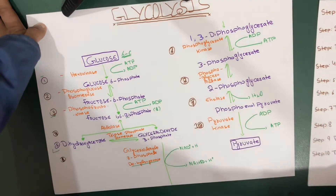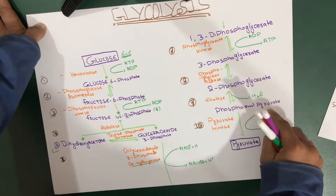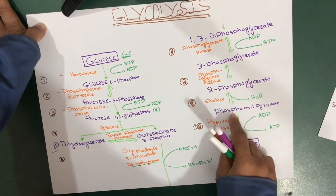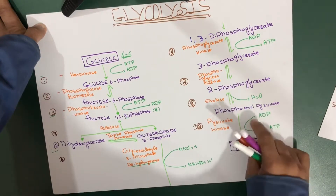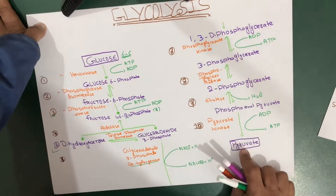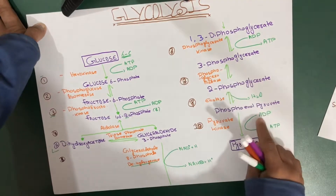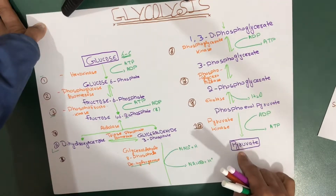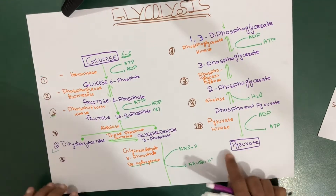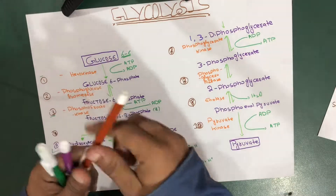Step ten is the transfer of the phosphate group from phosphoenolpyruvate to ADP. The phosphate is removed and given to ADP, converting it to ATP, and we get a simple pyruvate molecule. The enzyme that converts phosphoenolpyruvate to pyruvate is called pyruvate kinase.